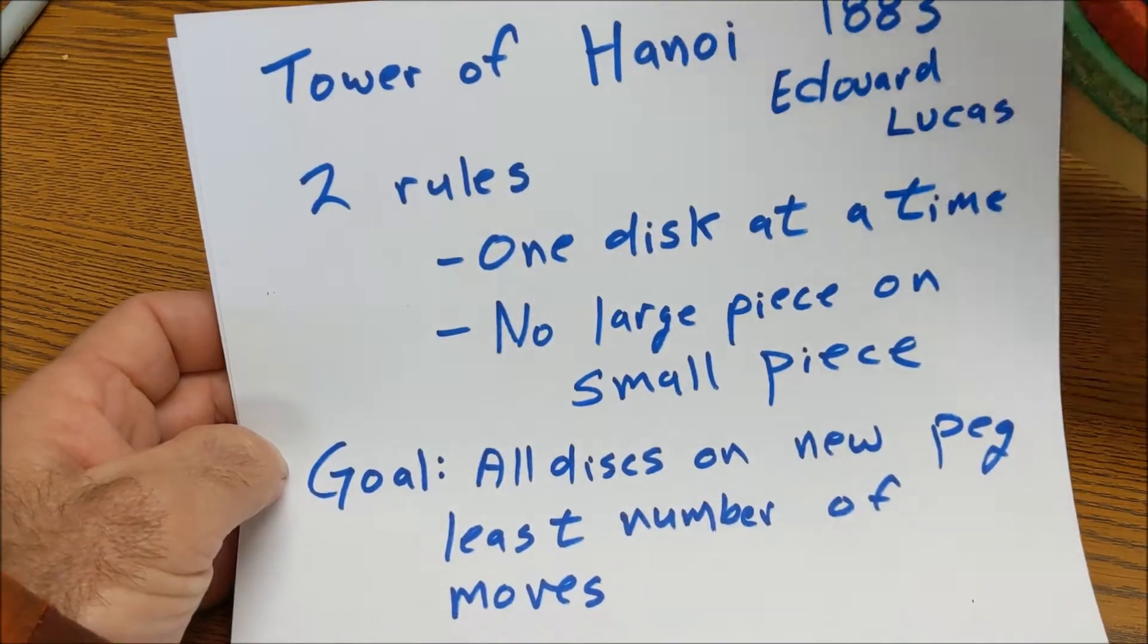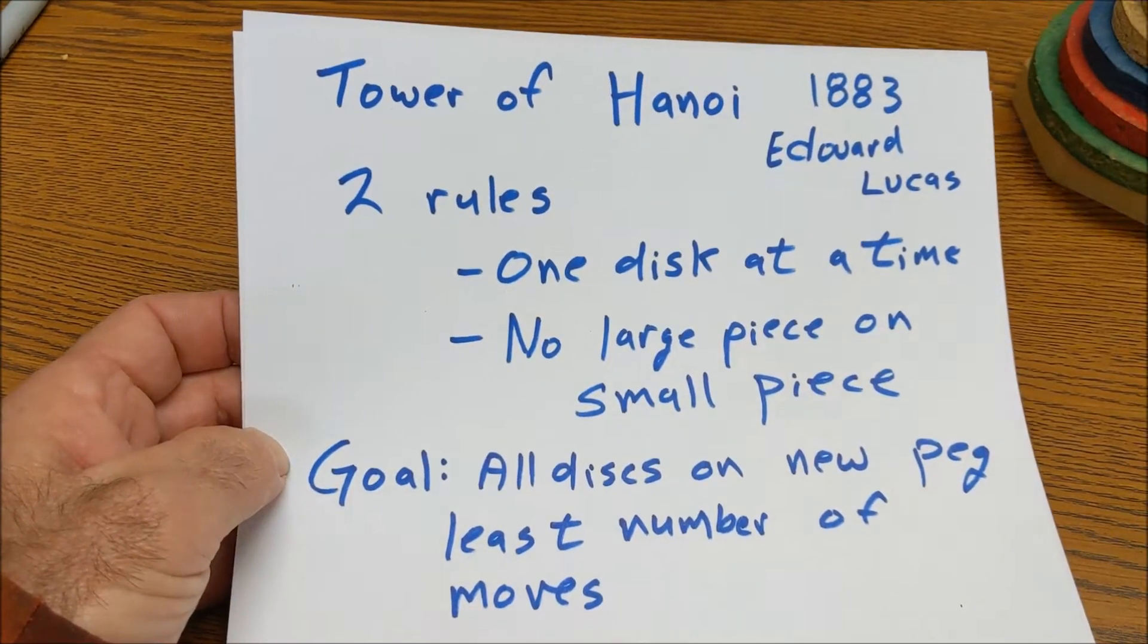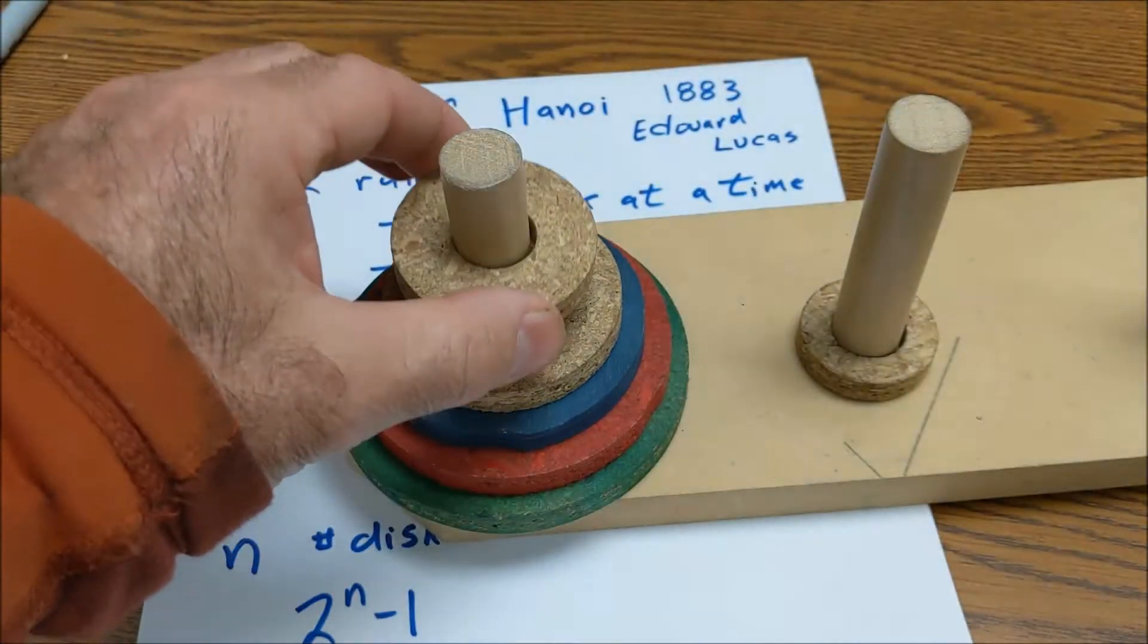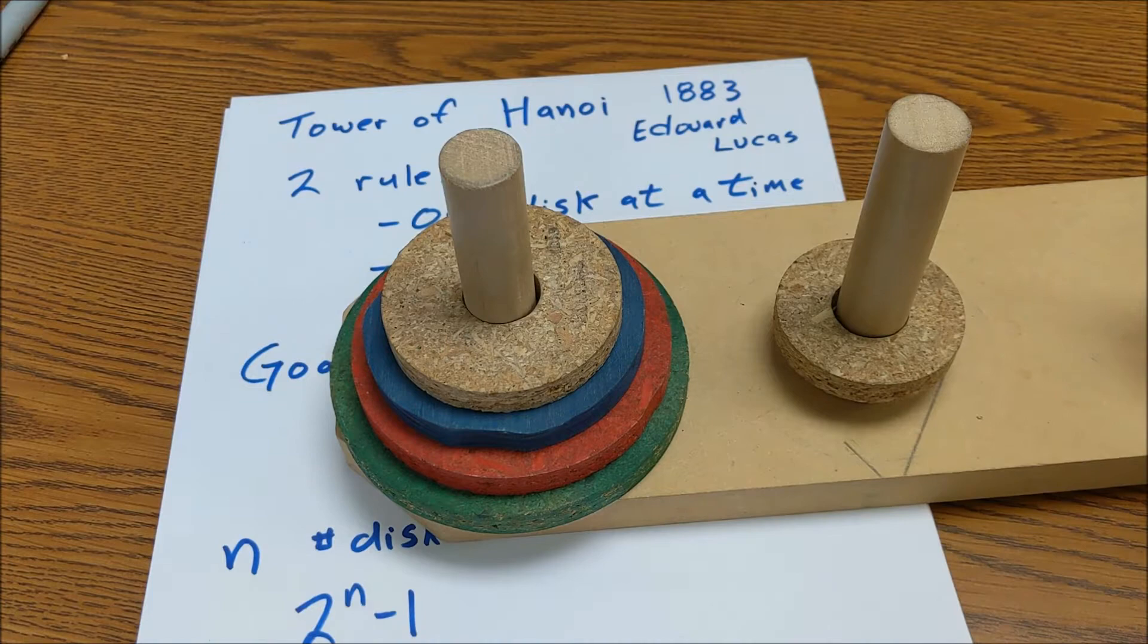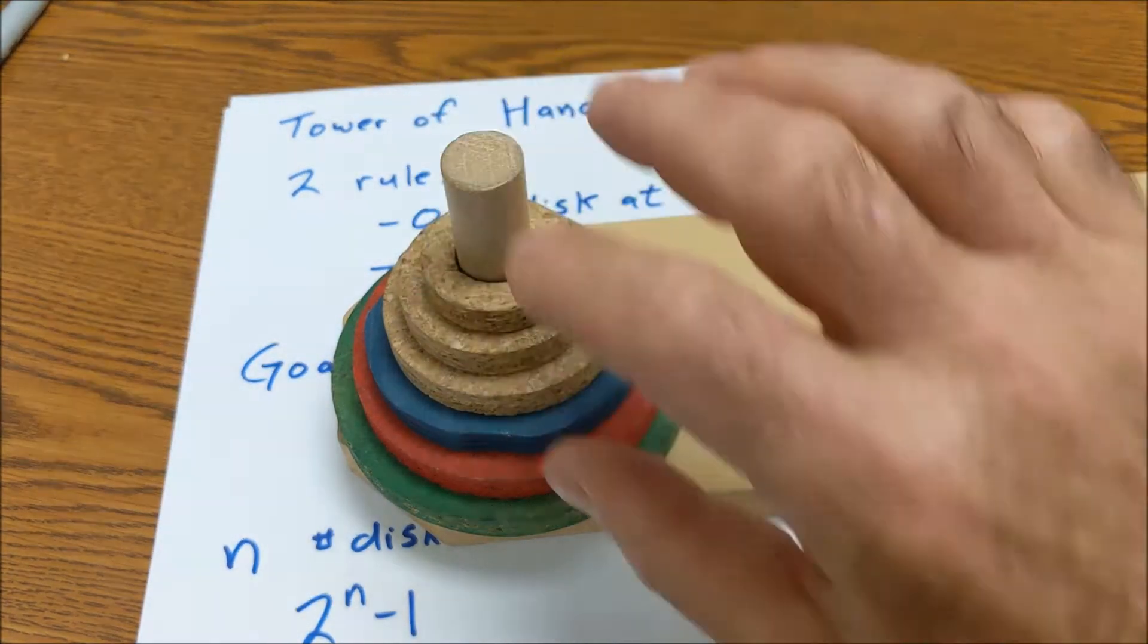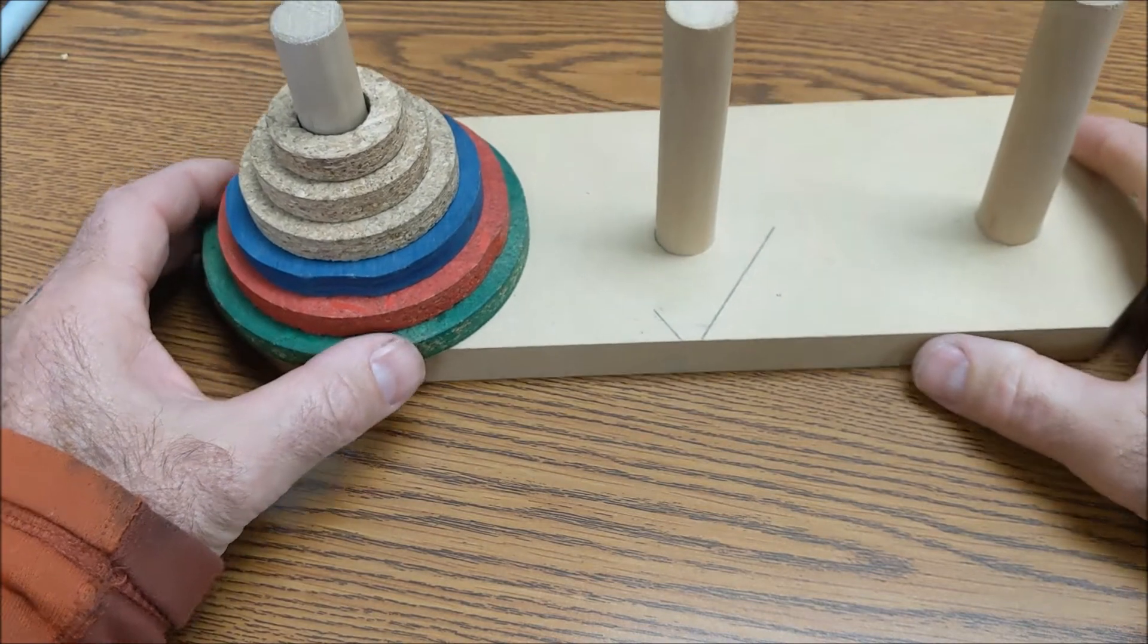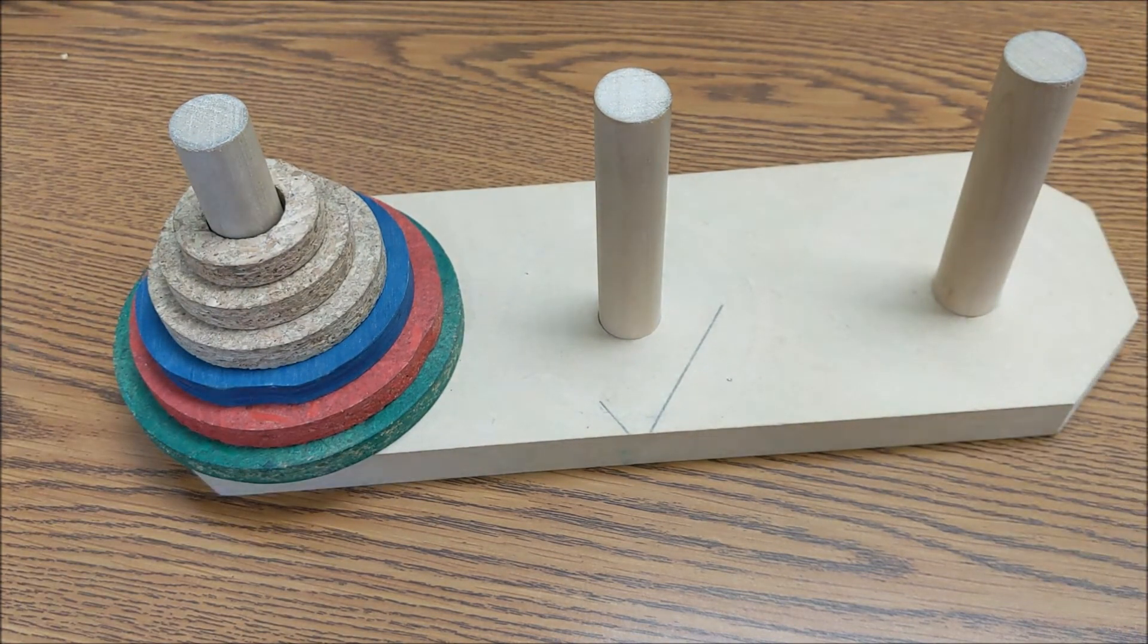There are only two rules to this game. Those two rules are one disk at a time. You can never move more than one disk. And you can't ever put a large piece on a small piece. So if you move one disk at a time, but then you can't put a large piece on top of a small piece. So those are the only two rules. And the goal of the game is to get every disk from one peg onto another peg. So this is kind of a classic math problem. It is also a classic programming problem to teach recursive algorithms.